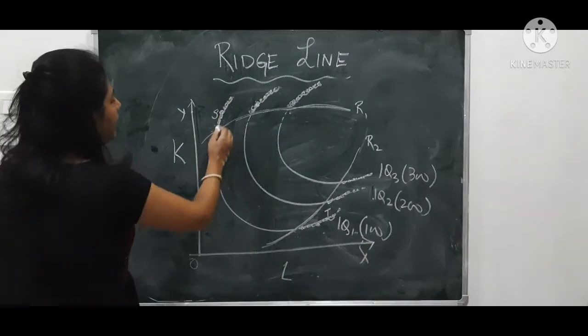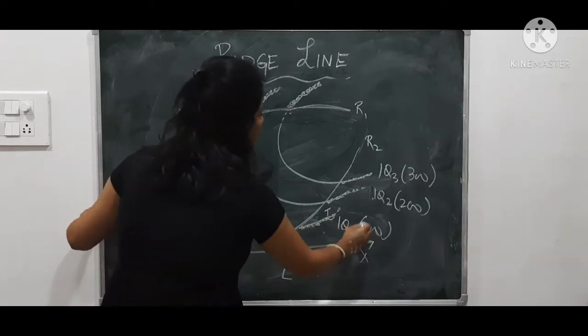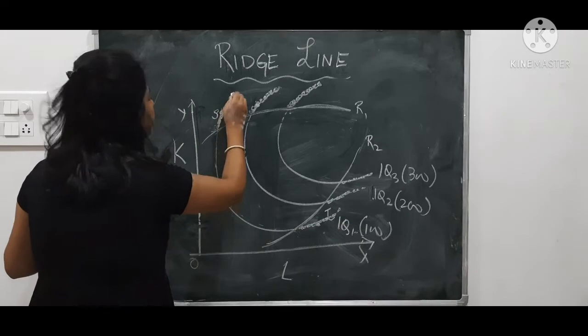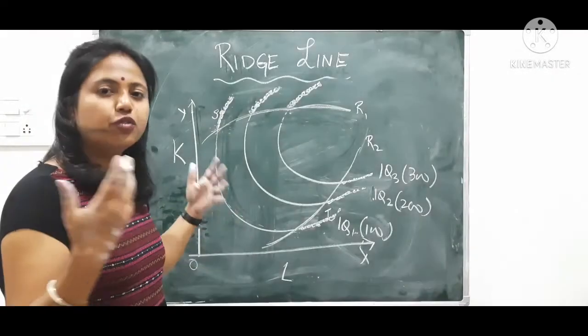This is the isoquant 1, IQ 1, which can produce 100 units. Any point on this curve will produce 100 units.